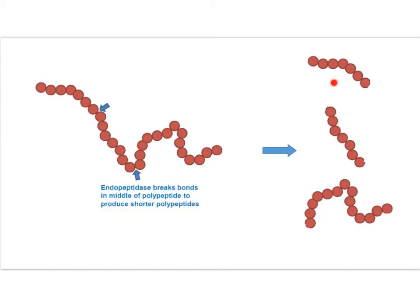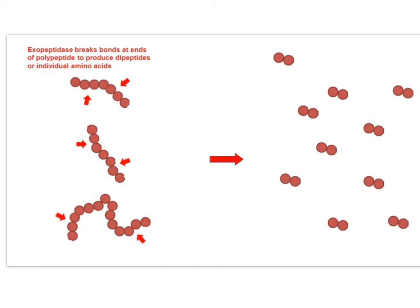So endopeptidase yields smaller polypeptides. The next type of enzyme is exopeptidase. You can see here we've got the smaller chunks — sections of polypeptides from before. The exopeptidases hydrolyse the peptide bond towards the ends of the polypeptide chains and they release dipeptides.